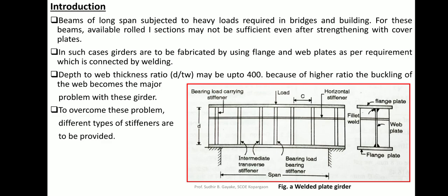In plate girders, we intentionally allow the web to buckle to improve economy. The web is classified by the d/tw ratio. If d/tw is less than 67ε, shear buckling check is not required and the web behaves plastically. When d/tw exceeds 67, the web will fail in shear buckling, and stiffeners must be added to improve the buckling strength of the web. These girders are used for long-span beams subjected to heavy loads in bridges and buildings.